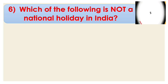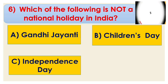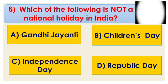Question number 6: which of the following is not a national holiday in India? Options are A. Gandhi Jayanti, B. Children's Day, C. Independence Day, and D. Republic Day. The right answer is B, Children's Day. We celebrate Gandhi Jayanti on 2nd October, Independence Day on 15th August, Republic Day on 26th January, and Children's Day on 14th November.